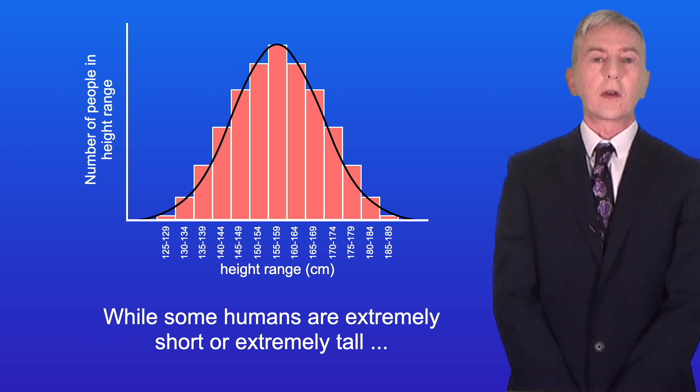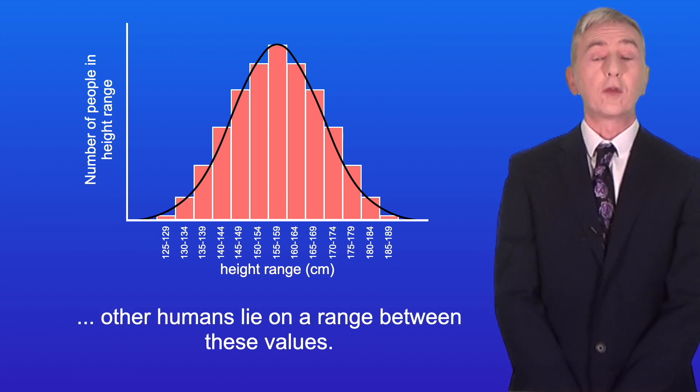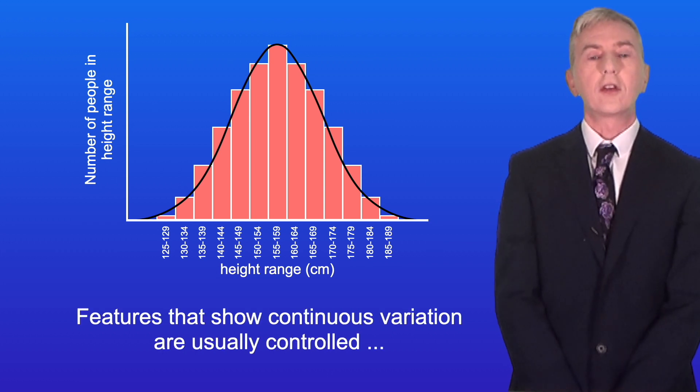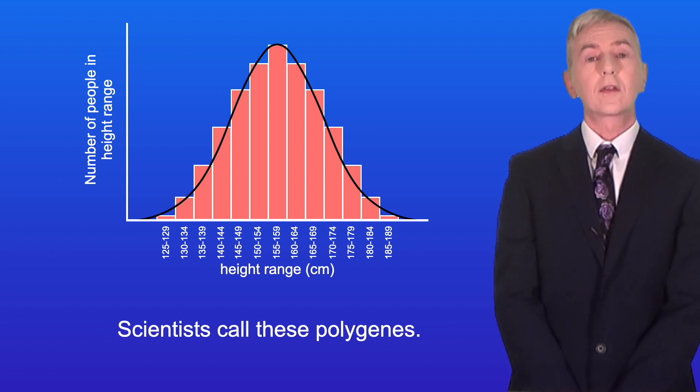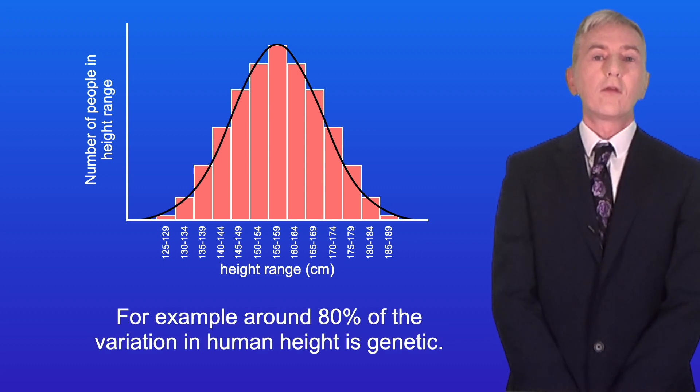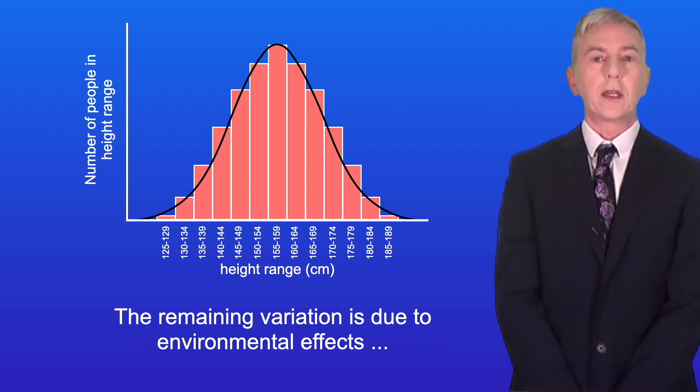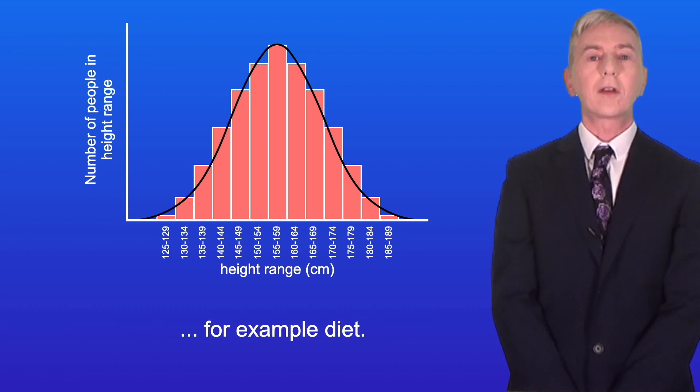While some humans are extremely short or extremely tall, other humans lie on a range between these values. Features that show continuous variation are usually controlled by several genes working together, and scientists call these polygenes. For example, around 80% of the variation in human height is genetic. The remaining variation is due to environmental effects, for example diet.